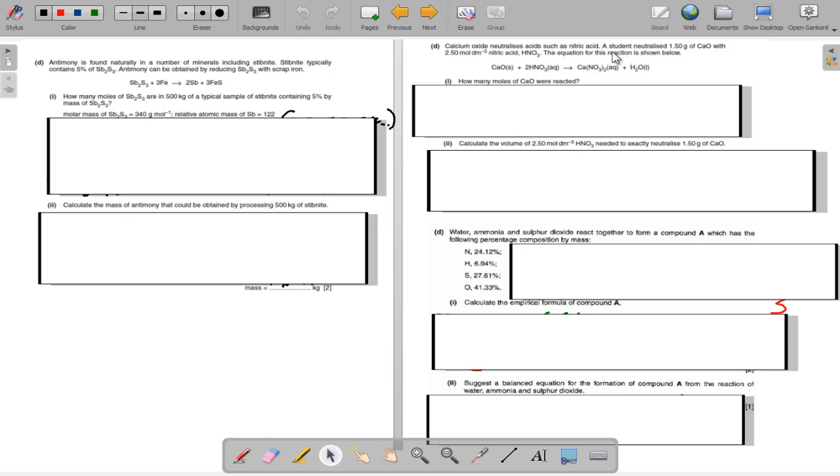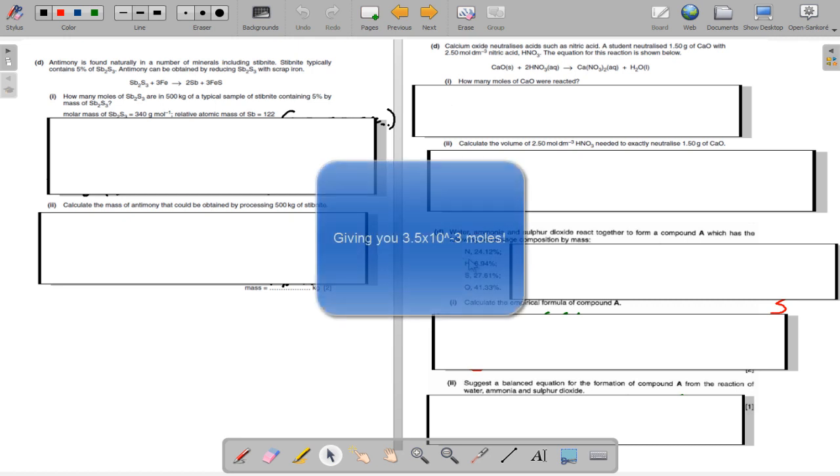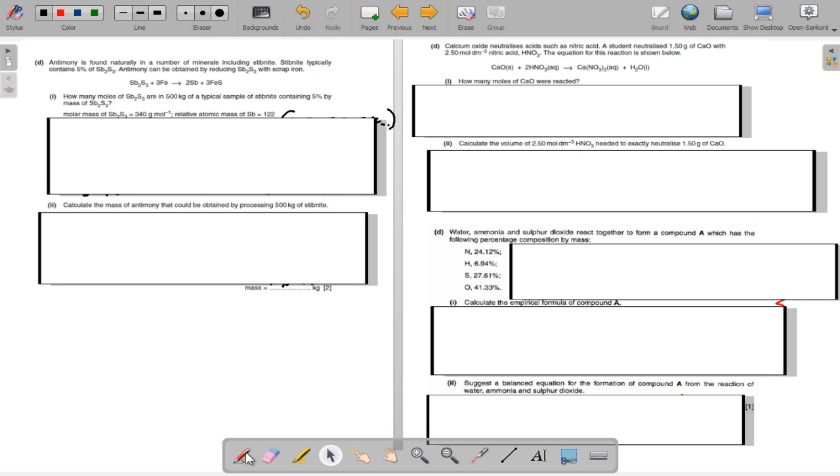For this question, a student utilized 1.5 grams of calcium oxide with 2.5 moles per decimeter cubed HNO3. 1 mole of calcium oxide to 2 moles of HNO3 gives you 1 mole of calcium nitrate and 1 mole of water. How many moles of CaO were reacted? We need to calculate the volume of 2.5 moles per decimeter cubed HNO3 needed to exactly neutralize 1.5 grams of calcium oxide. There's an empirical formula question with nitrogen, hydrogen, sulfur, and oxygen. We need to calculate the empirical formula of compound A and suggest a balanced equation for the formation of compound A from the reaction of water, ammonia, and sulfur dioxide. Give you a few seconds and we'll go through the answers.